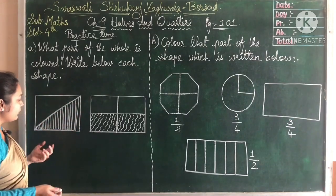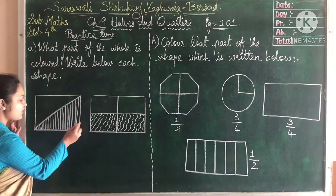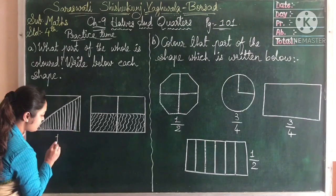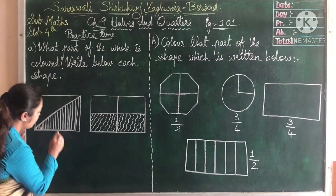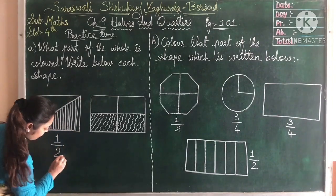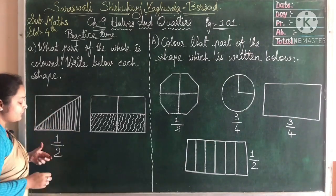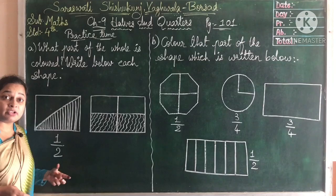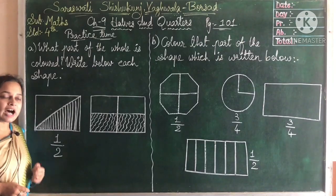We can write that: one shaded part, so here one. And total two parts, so two. The fraction will come here as a half.